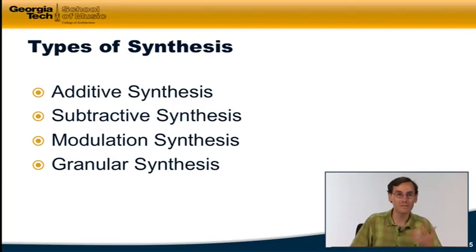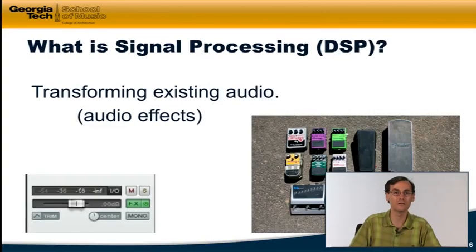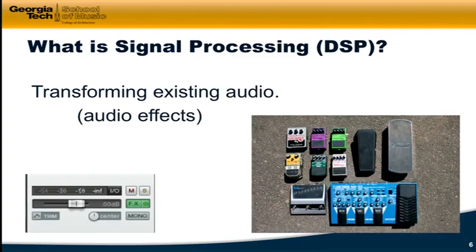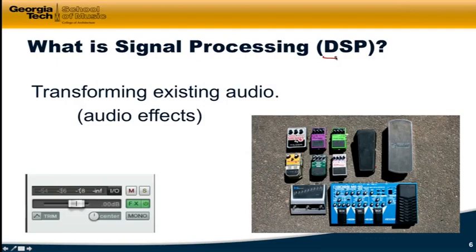That's what synthesis is, along with some basic types of synthesis. So what is the difference between synthesis and signal processing? Signal processing is about transforming existing audio — the same way we've done when we've added audio effects to tracks in Reaper, the same way that effects pedals work when we plug a guitar into an effects pedal. We get in some kind of source audio, we do something to it, and send the transformed version out. When we do this in the digital domain, we tend to call it DSP — digital signal processing.